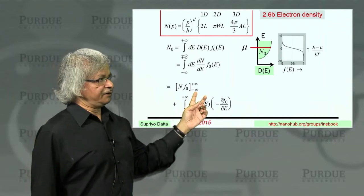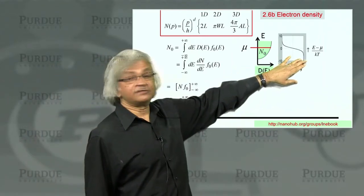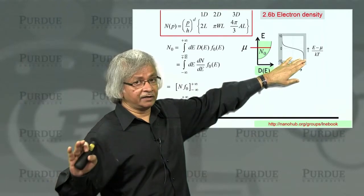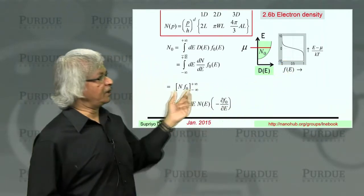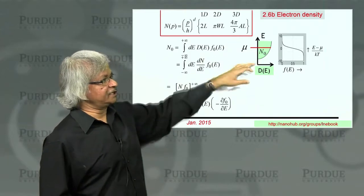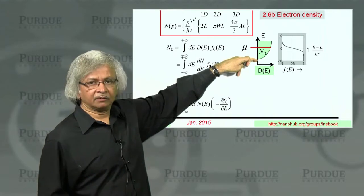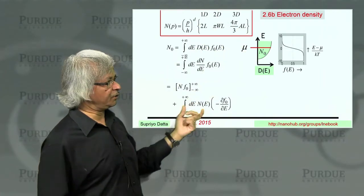Well, what about minus infinity? Well, because that means I'm at very low energies. Now, of course, F0 is not zero, it's one. So I can't ignore F0. But the point is the N, the N of E, that function is zero down here. Because it kind of starts at the bottom of the band. That's where it starts growing.